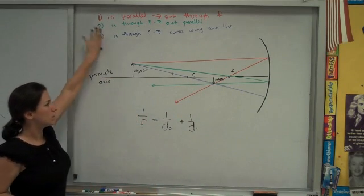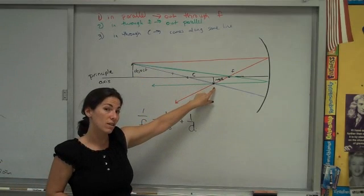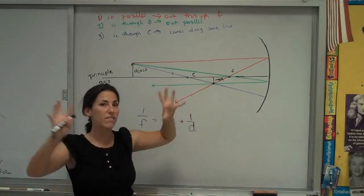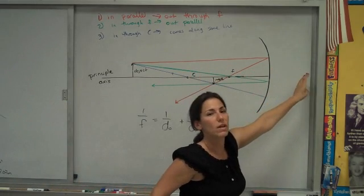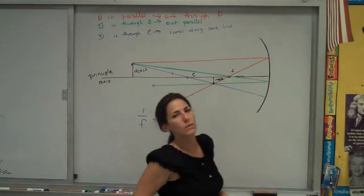But again, use these three rules. See where all the reflected rays meet. That's where the real image is. Or if they diverge, dash those diverging rays back behind the mirror and see where the virtual one is.